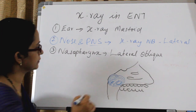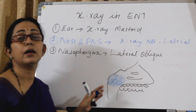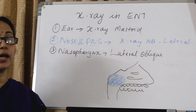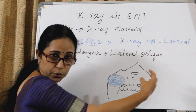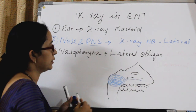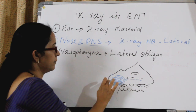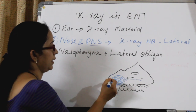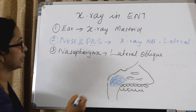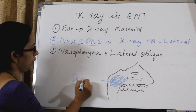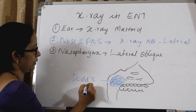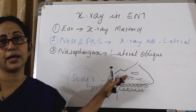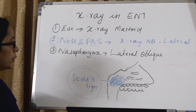If this is an antrochoanal polyp, what will be the difference? An antrochoanal polyp is one which is arising from the nose and going posteriorly. So there will be an air column between this mass and the nasopharynx — that is the distinguishing feature of an antrochoanal polyp.